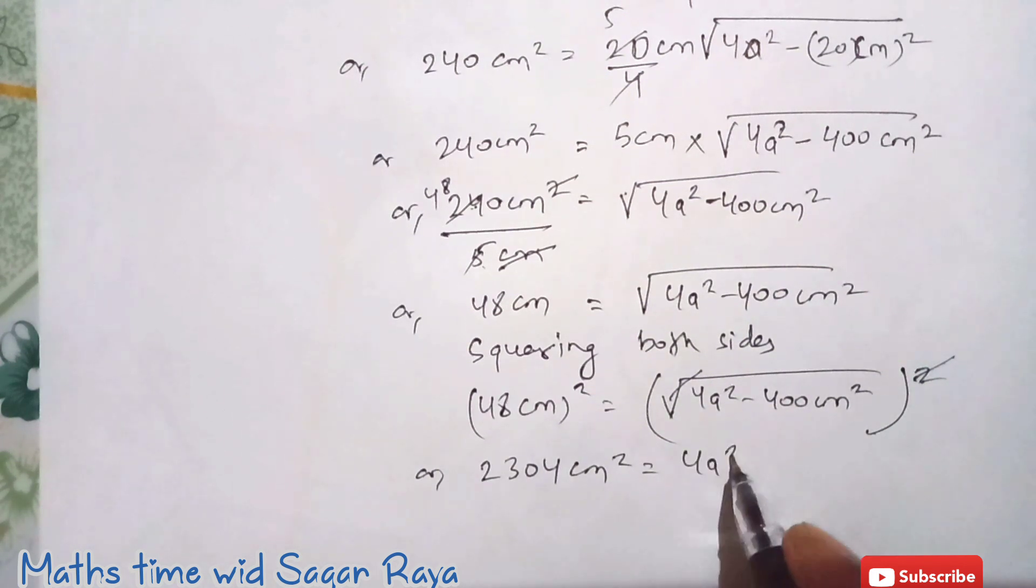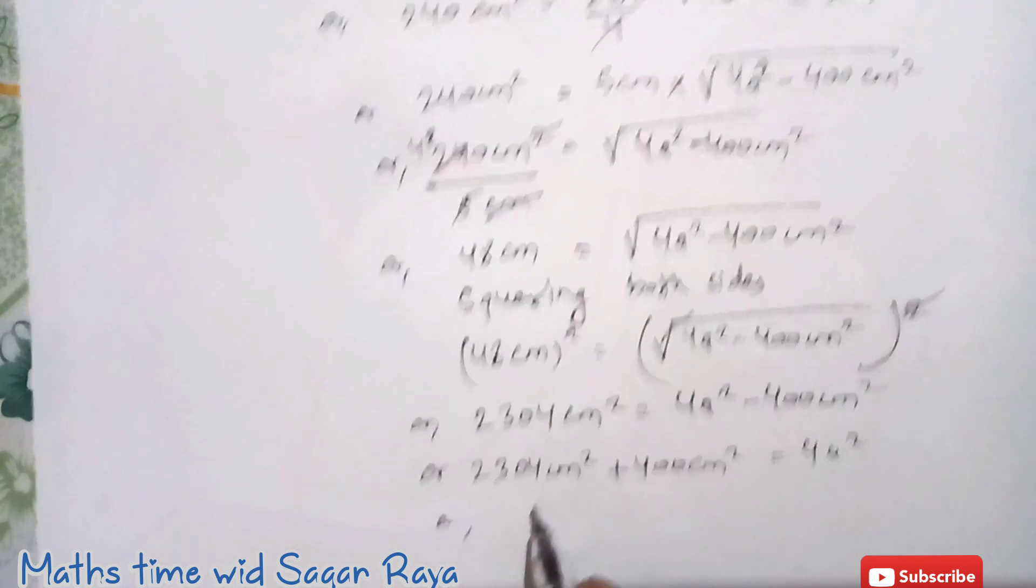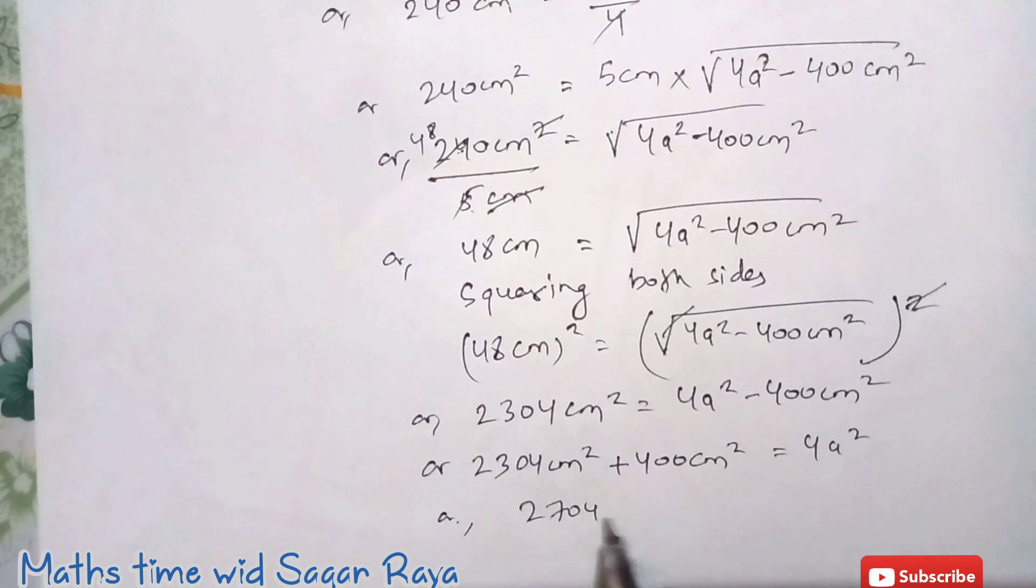And here 4a square minus 400 cm square. This 400 cm square when it is brought to left hand side it becomes plus 400 cm square. And when you add this it becomes 2704 cm square equals to 4a square.